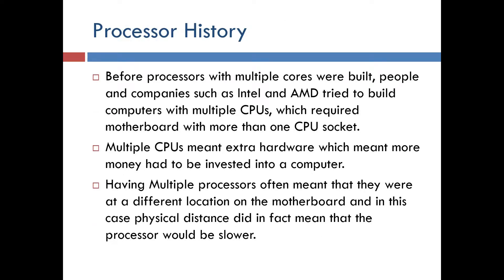Before processors with multiple cores were built, people and companies such as Intel and AMD tried to build computers with multiple CPUs, which required motherboards with more than one CPU socket. Multiple CPUs meant extra hardware, which meant more money had to be invested. Having multiple processors often meant they were at different locations on the motherboard, and physical distance meant the processor would be slower.